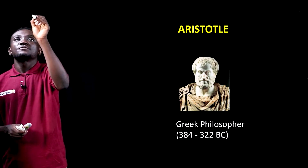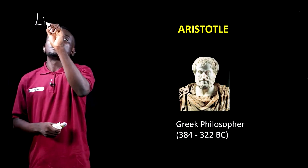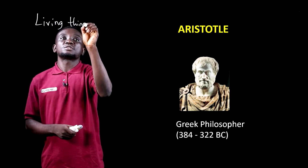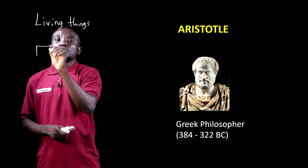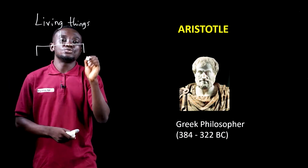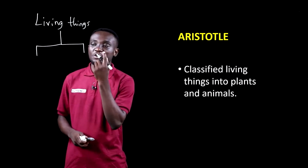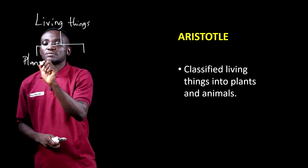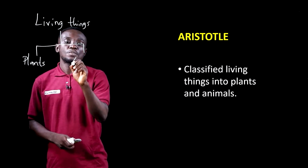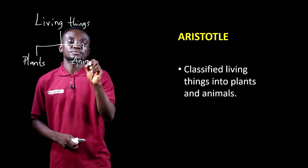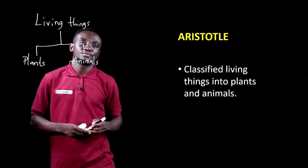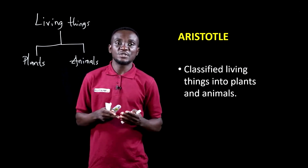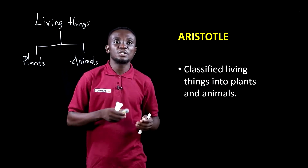From Aristotle's perspective, living things or living organisms were grouped into two: plants or animals. So, according to him, a living organism is either a plant or an animal.